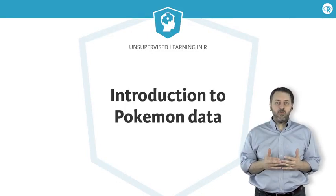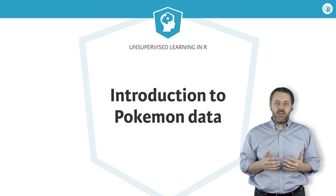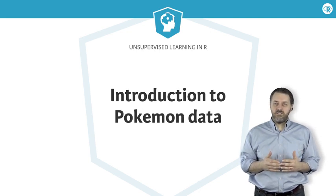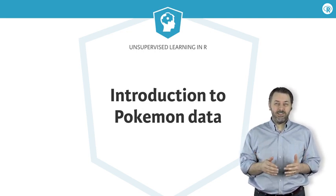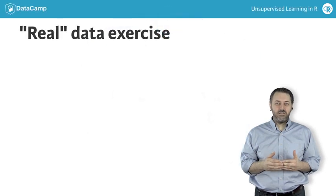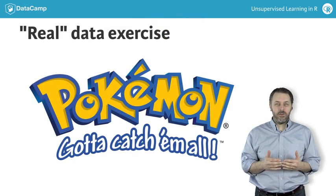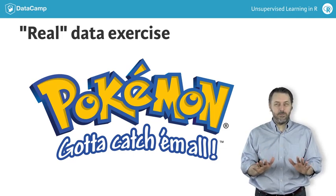So far, you have applied what you have learned about the K-Means algorithm to synthetic data. In this final set of exercises, you will apply your learning to a real-world data set. This data set is about 800 Pokemon from the Pokemon games — and no, this isn't from Pokemon Go.